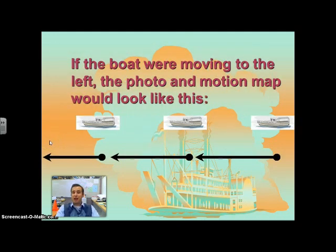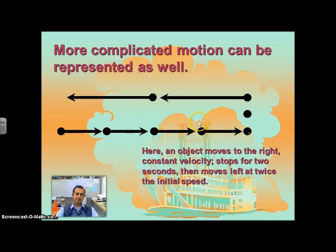Now if we had the boat traveling backwards, going left, the motion map would look similar, but now we have our arrows drawn to the left, representing that the boat is moving to the left.